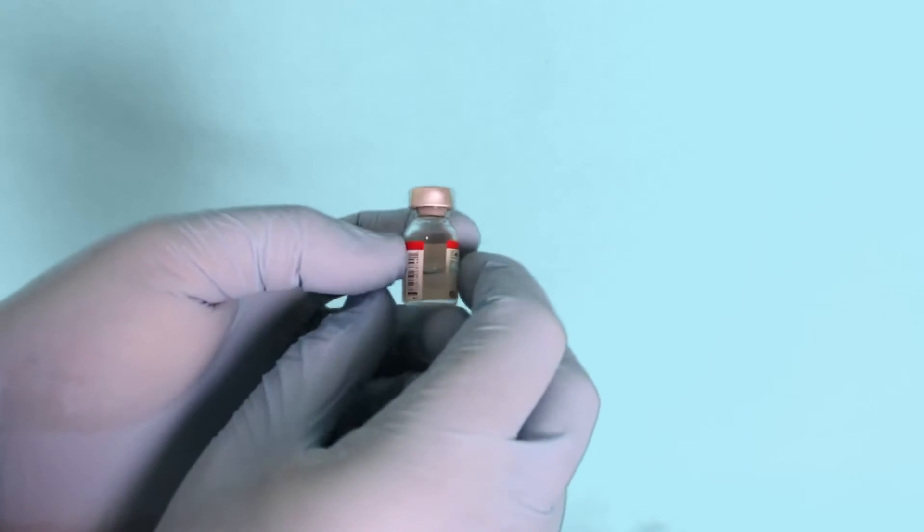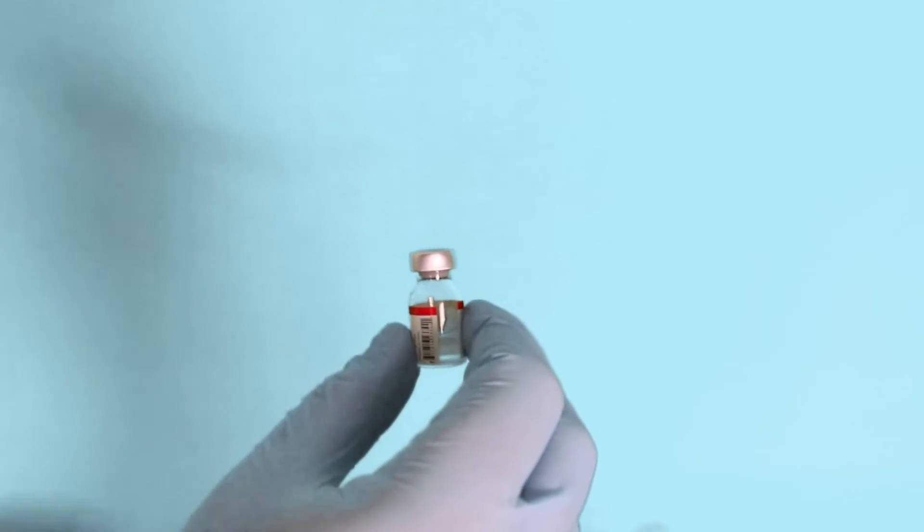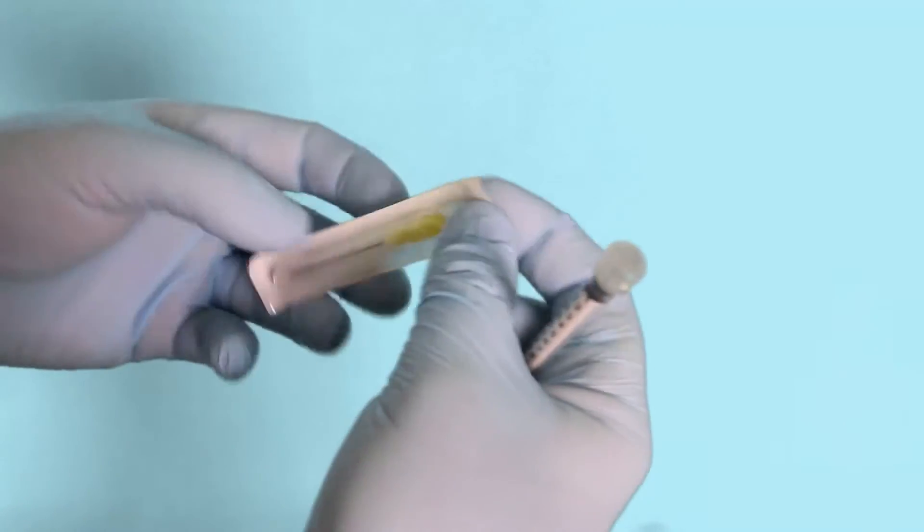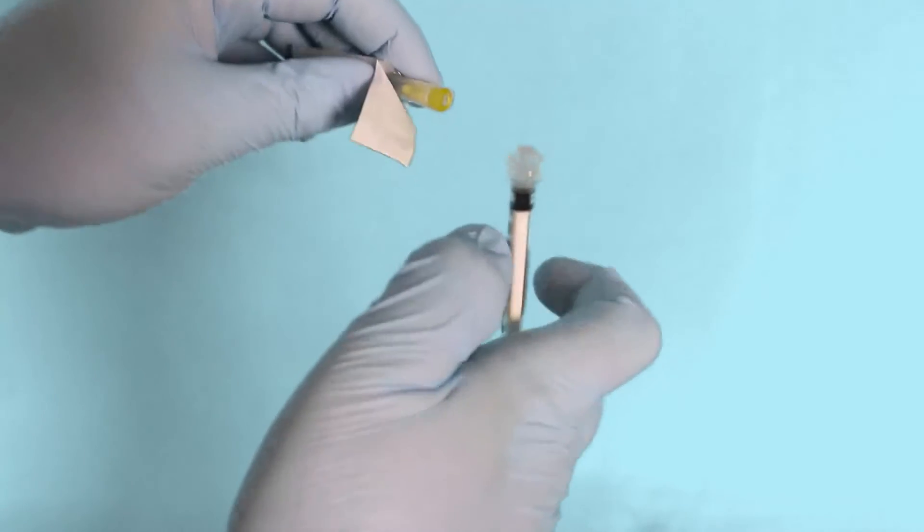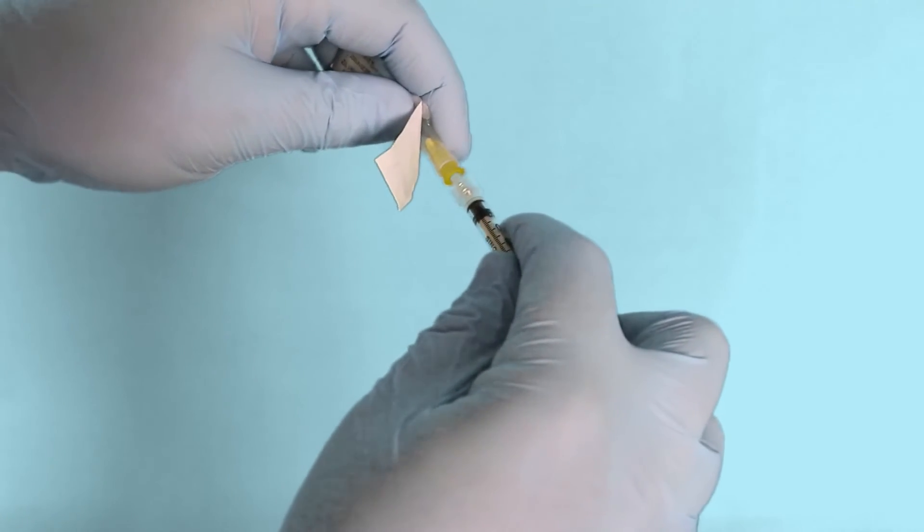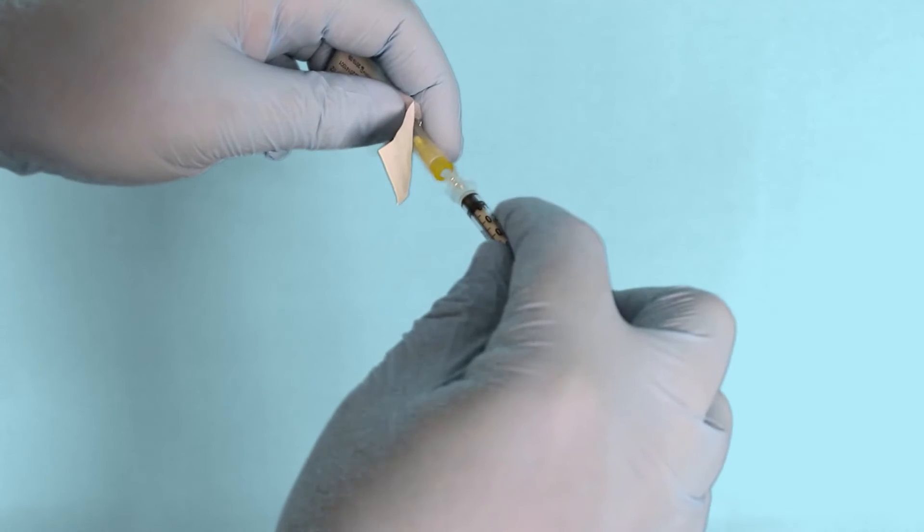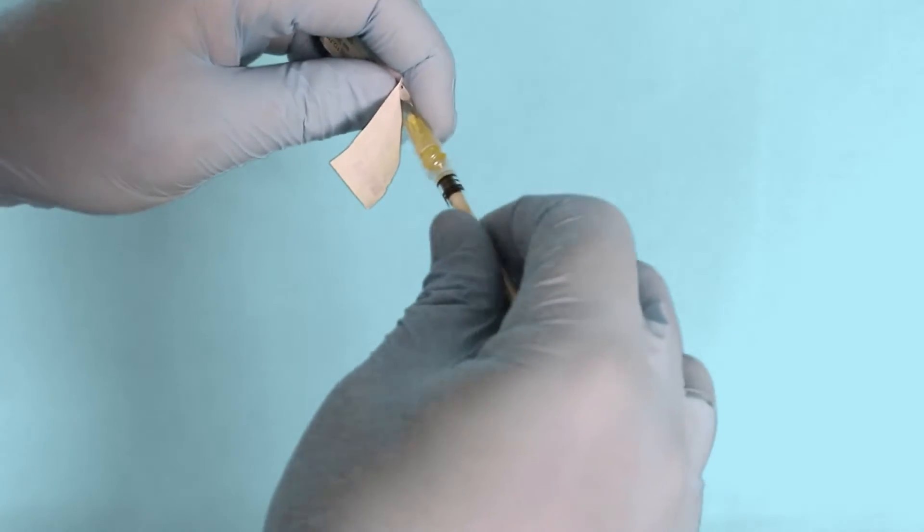Secondly, in order to remove fluid from a vial, we first need to inject an equal volume of air into that vial as the amount of fluid we wish to withdraw. This compensates for negative air pressure that would be created by attempting to remove fluid. The exact amount will depend on the size of dose you intend to inject.